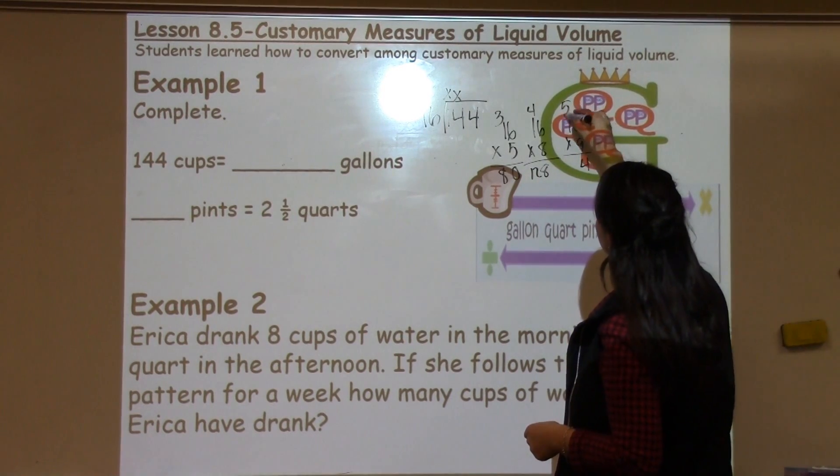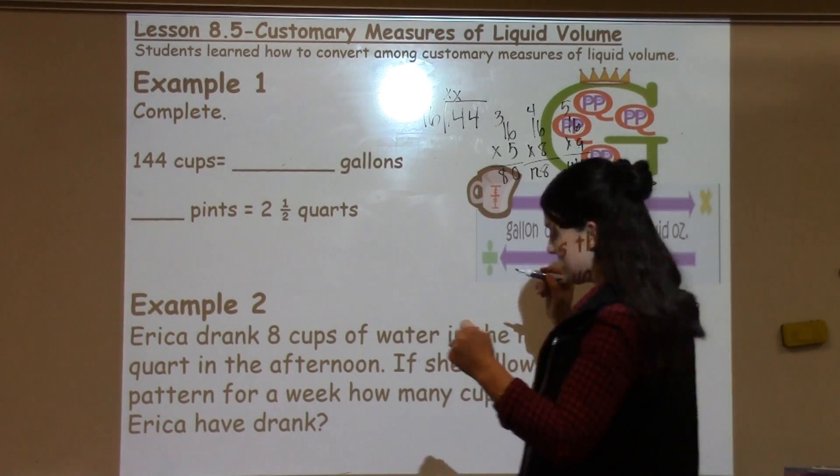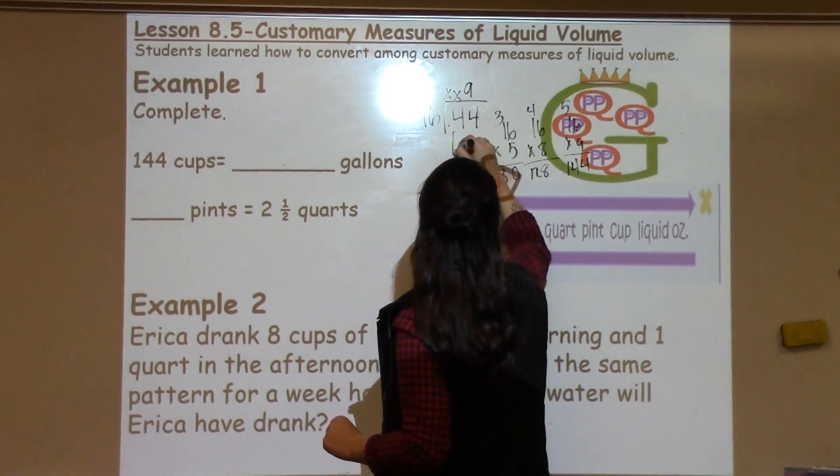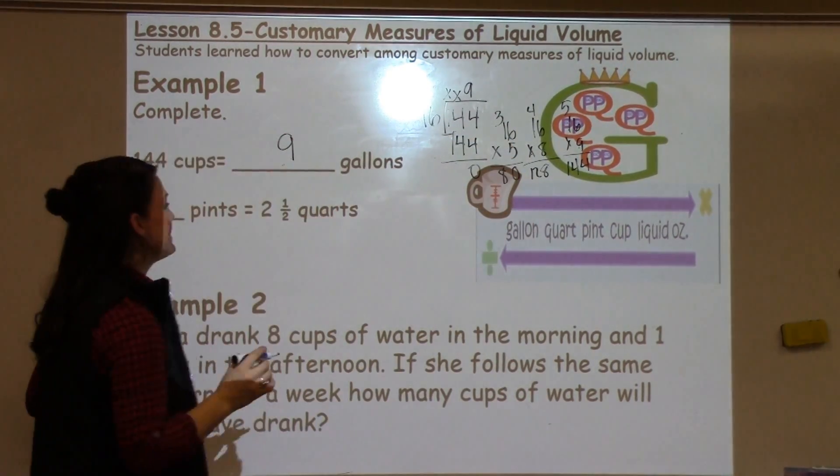I need to get even larger. So, I'm going to try 9. 9 times 6 is 54. 9 times 1 is 9. Plus 5 is 14. And I got exactly what I need. So, my answer is 9 gallons.